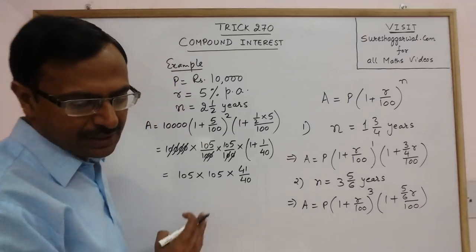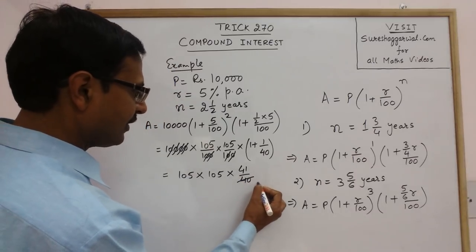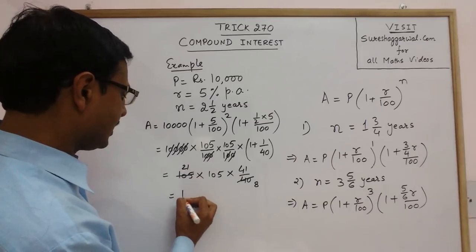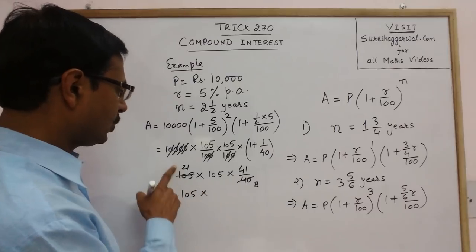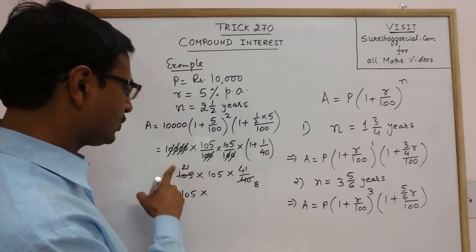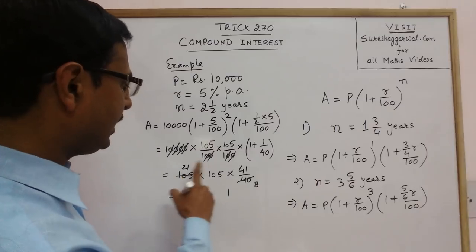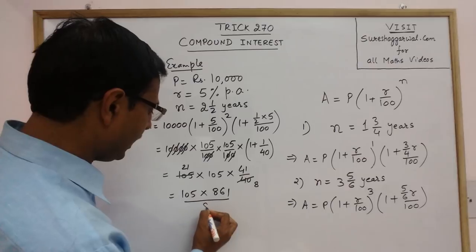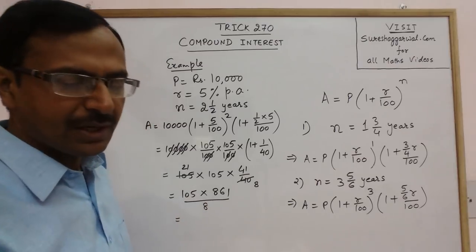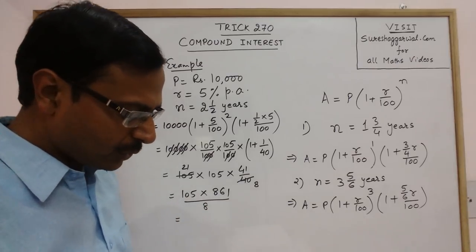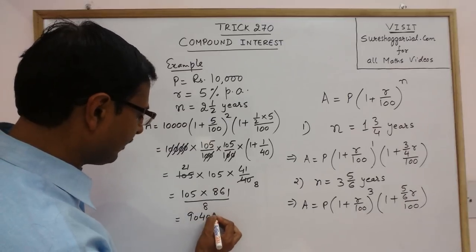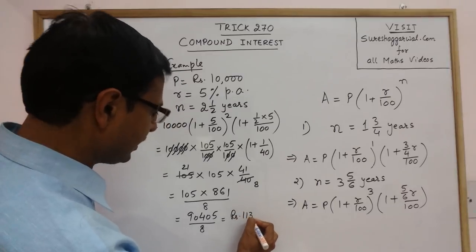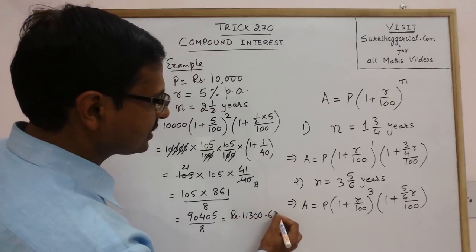Now you can very easily cancel this out with 5, see 5 goes into 40, 5 goes 21 times, so this is 105 into 21 into 41. So 21 into 1, 21, 1 to carry, 84 plus 2 is 86 upon 8, and this calculation I have already done it for you to save time, this is 90405 upon 8, the answer will come out to be 11300.625.